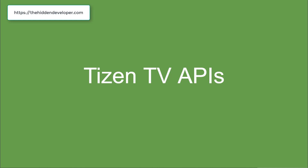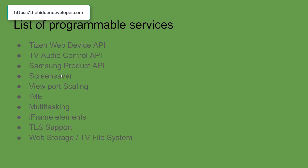Let's take a look at the list of APIs that Tizen provides. When you look at the list, you have the Tizen Web Device API, the TV Audio API, Samsung Product API, ScreenSaver, Viewport Scaling, IME, Multitasking, iFrame, and the Tizen TVSDK API.